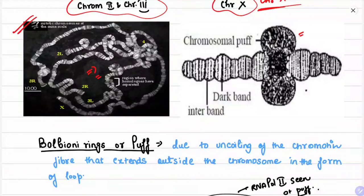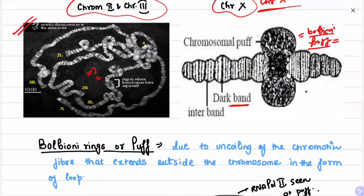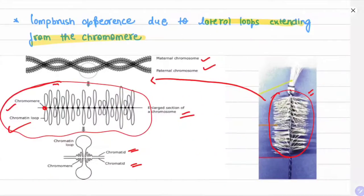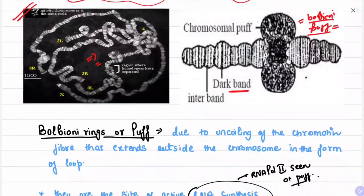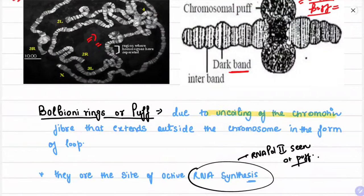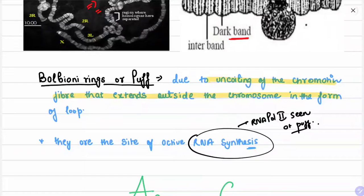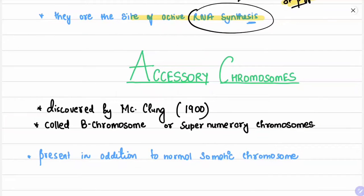The chromosomal puffs are called Balbiani puffs or Balbiani rings. The giant chromosomes have dark bands. These Balbiani puffs are similar to the loops seen in lampbrush chromosomes — they are formed due to the uncoiling of chromatin fiber extending outside the chromosome in the form of a loop. These puffs are sites of active RNA synthesis, and RNA polymerase II is usually seen at these puffs.